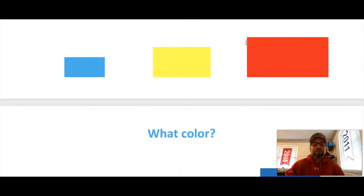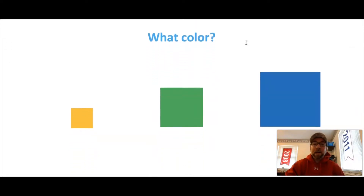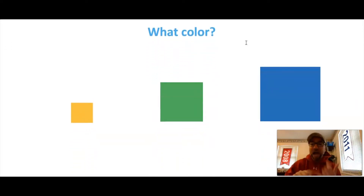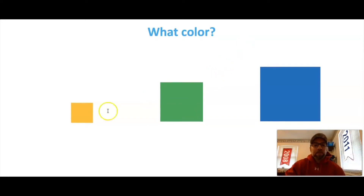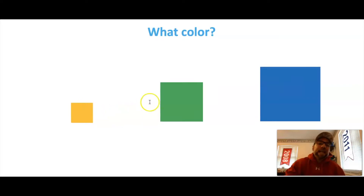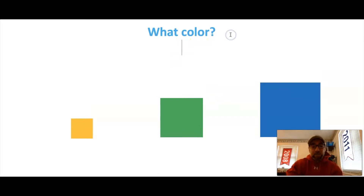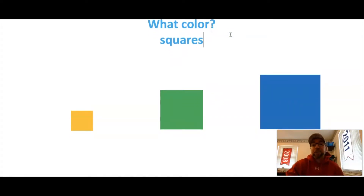Let's keep looking. What color? We looked at the size, the number of corners, the number of sides, and now the color. We have orange, green, blue. Colors can be different on shapes. I wonder what the name of these shapes is. These shapes are called squares. Every side is exactly the same length.